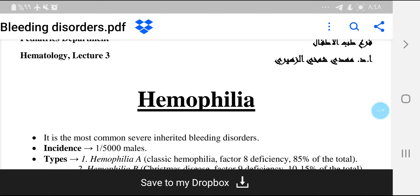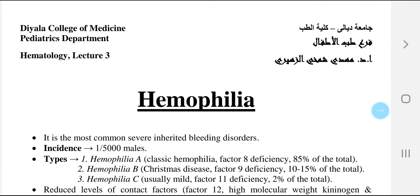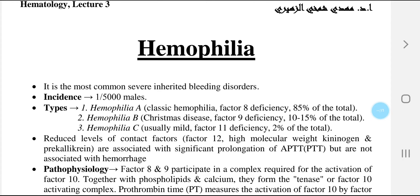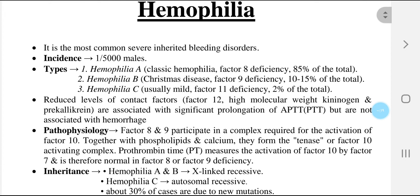We will discuss hemophilia — it is the most common severe inherited bleeding disorder. The incidence is 1 per 5,000 males. Types include: first, hemophilia A, called classic hemophilia, which is factor 8 deficiency, representing 85% of the total; second, hemophilia B, called Christmas disease, which is factor 9 deficiency, representing 10 to 15% of the total.